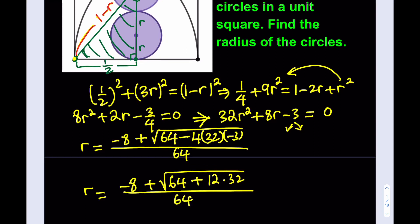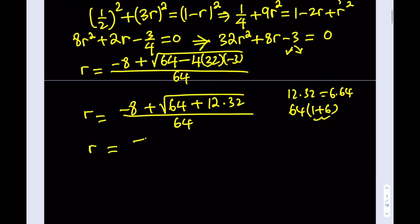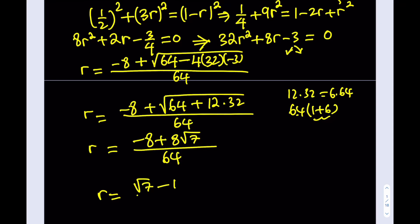Now notice that here we can factor out 64 from inside the radical, because 12 times 32 is 6 times 64. If I factor out 64, it's going to look like 1 plus 6, which is 7. So this expression can be written as negative 8 plus 8√7, all over 64. Dividing everything by 8, R equals (√7 − 1) / 8.